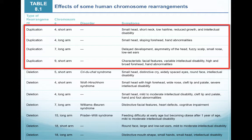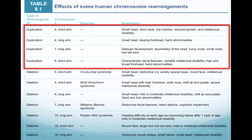This chart, Table 8.1 from your book, gives us the duplication type of rearrangement, followed by the different chromosomes that we commonly see rearrangements on, and then some of the symptoms. There are no major disorders with duplication, but a duplication on chromosome 4 may result in a small head, short neck, or low hairline. A duplication on the long arm of chromosome 4 may result in a small head, sloping forehead, and hand abnormalities.